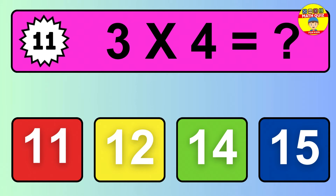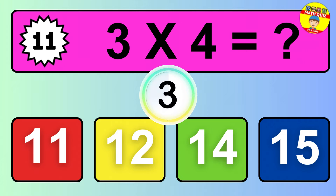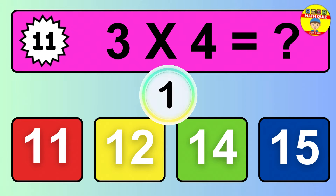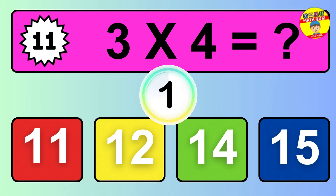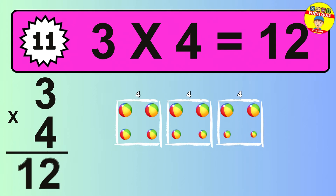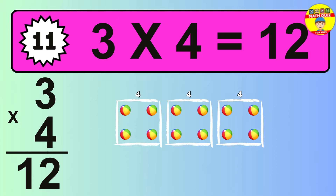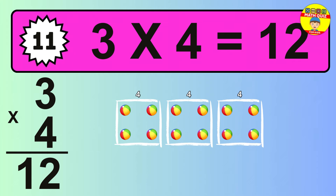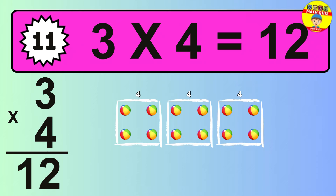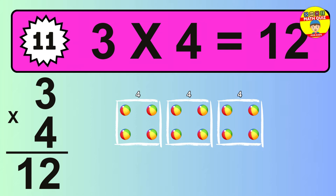Question 11. 3 times 4 equals what? The answer is 3 times 4 is 12. To calculate, we have 3 groups with 4 balls each one. So, how many balls do we have? 12 balls.